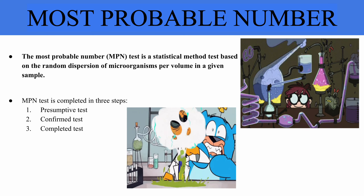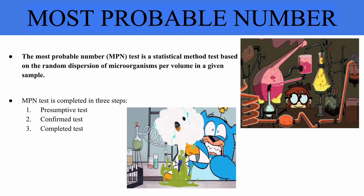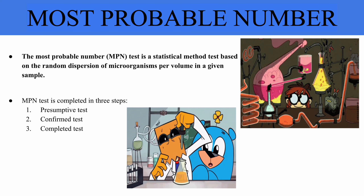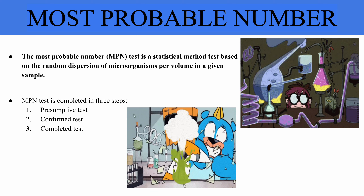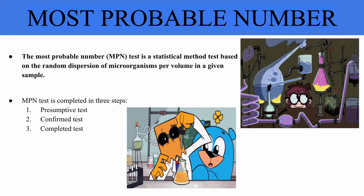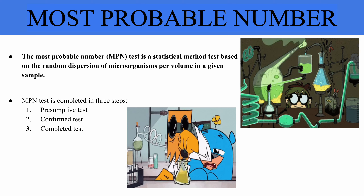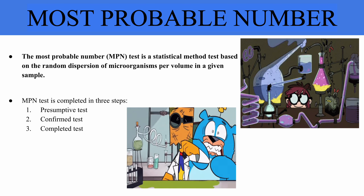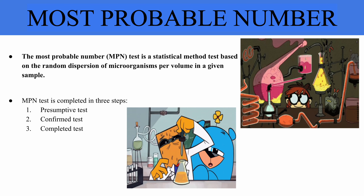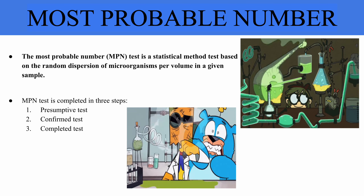Coliform bacteria ferment lactose, causing a color change in the presence of a pH indicator dye. For the confirmed test, a loopful of growth from a presumptive positive tube is transferred to a tube of Brilliant Green Lactose Bile Broth (BGLB) and incubated. The medium contains lactose and selective agents, with positive tubes indicating gas production. Endo agar plates are then streaked with growth from positive tubes to identify typical coliform colonies.